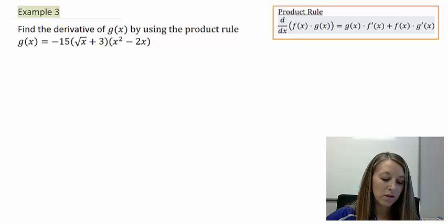Find the derivative of g(x) again by using the product rule. So I am forcing you to do it. My equation is negative 15 times the square root of x plus 3 times x squared minus 2x.